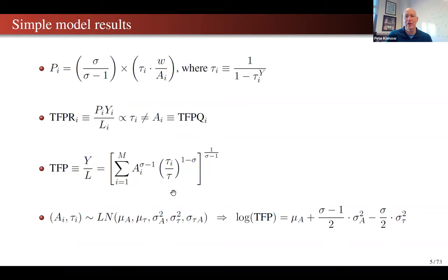So if you were studying whether there's rapid learning by doing from entering export markets, you'd want to look at TFPQ's evolution rather than TFPR. TFPR might just reflect markups, and if there's no relation between markups and learning, you might not see anything, even though the underlying TFPQ might be soaring as a result of learning by exporting.